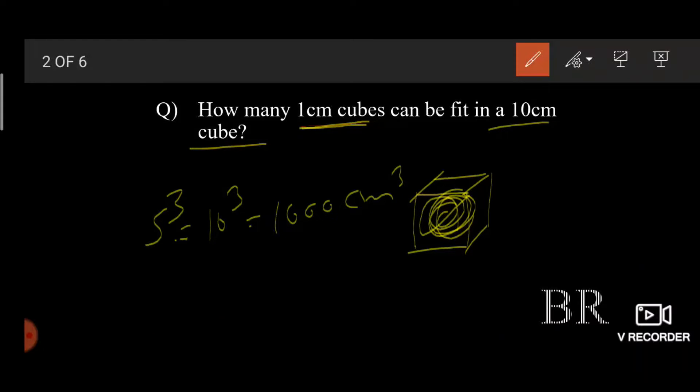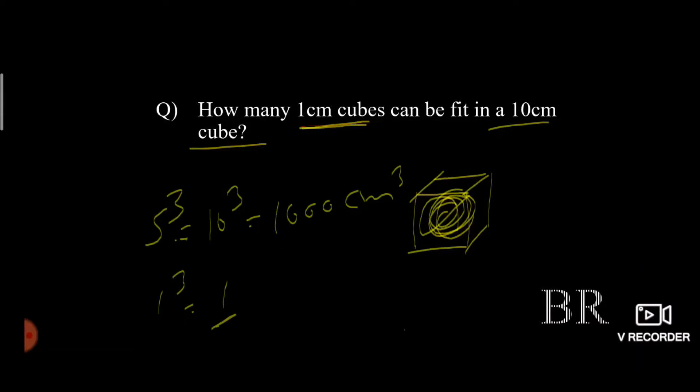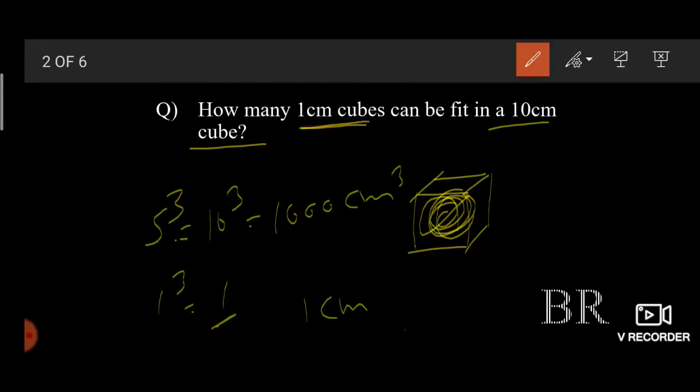And for 1cm cube it is 1 itself. So when we interpret the question with this data, we get 1cm cube into how many can fill an entire volume of 1000cm cube. If we assume this as x, we get the answer as 1000. Centimeter cube gets cancelled and 1000 remains. So the final answer is 1000, that means 1000 1cm cubes can be fit in a 10cm cube.